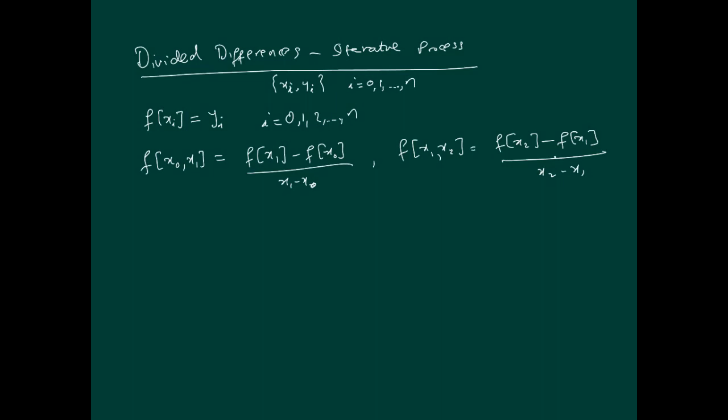That's what this notation stands for. Remember, f(x1) is just y1 and f(x0) is just y0 — these are data points. So you can actually calculate these very easily: y1 minus y0, divided by x1 minus x0. This is called the first divided difference.